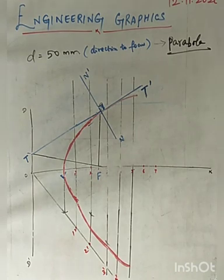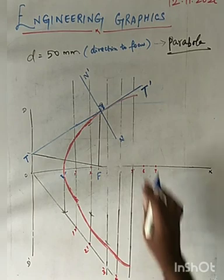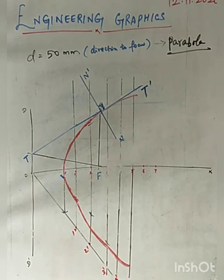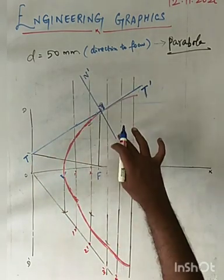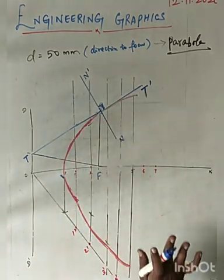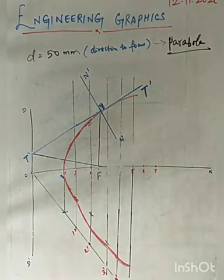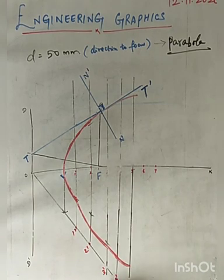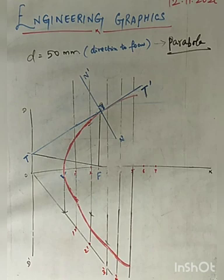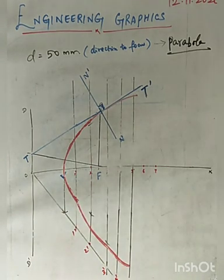This is the procedure to draw the tangent and normal at any point on the curve. Which lines should be drawn darker? The parabolic curve, the tangential line, and the normal line — these three should only be darker. All other construction lines should be very thin. Draw thin lines using an H or 2H pencil. Even the directrix line should be thin.